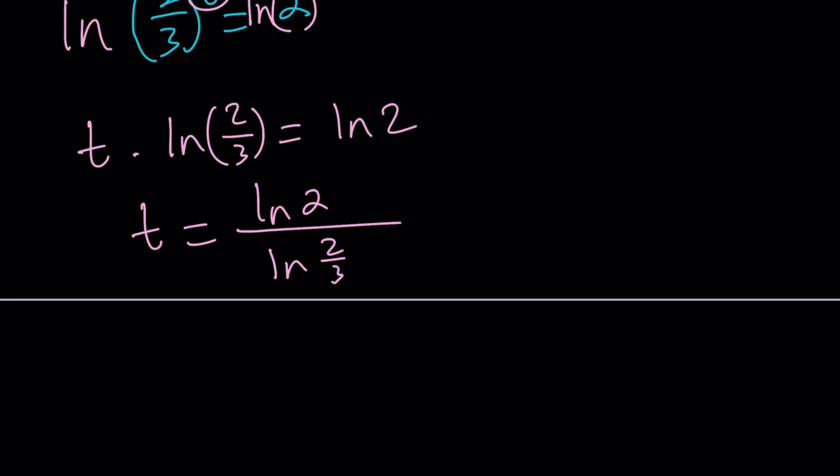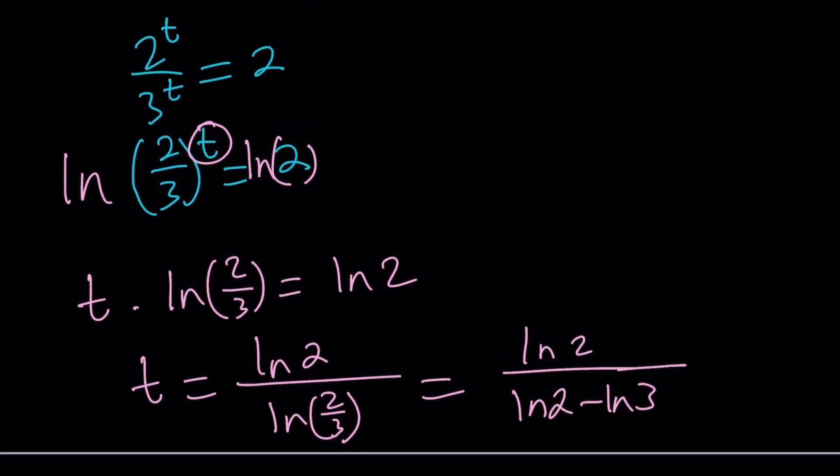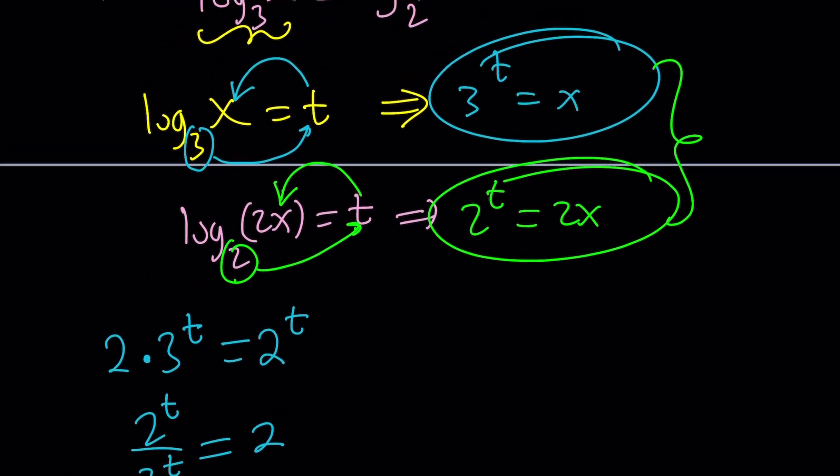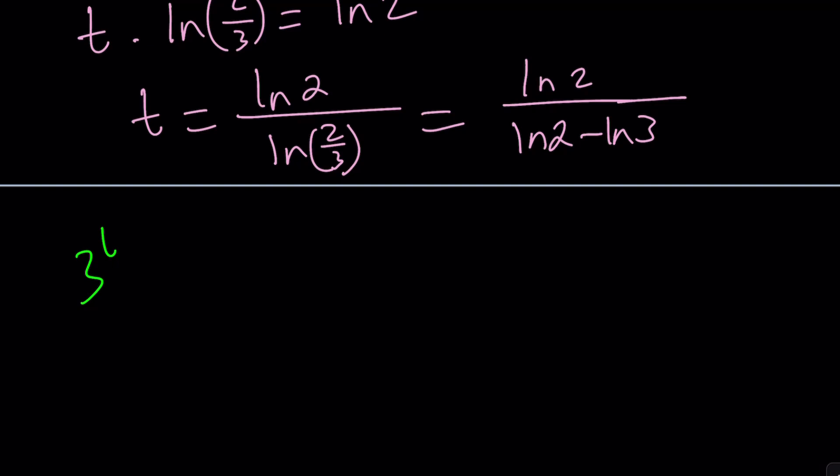ln(2/3) from quotient property can be written as ln 2 minus ln 3. Whenever you have the ln of a quotient, that can be written as the difference of the ln's. So t equals ln 2 divided by ln 2 minus ln 3. Now this is my t value. Be careful because you're not solving for t, you're solving for x. What is the relationship? Well, 3 to the power of t equals x. Let's write it down. 3 to the t equals x.